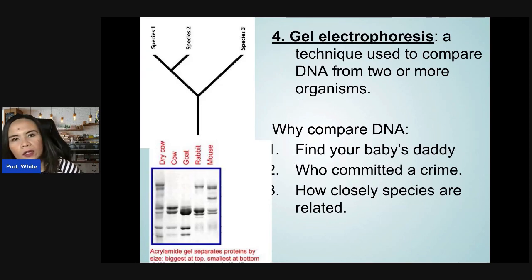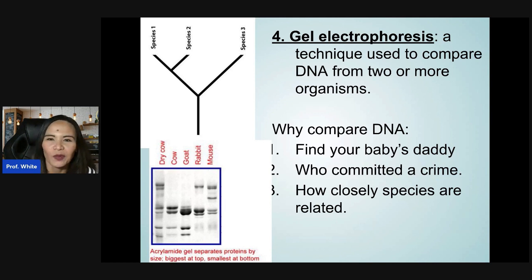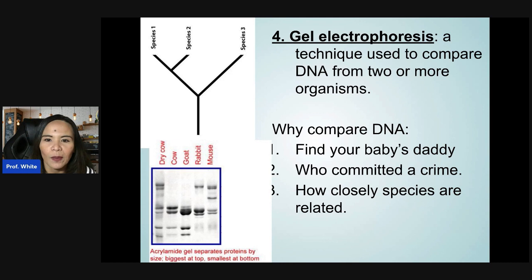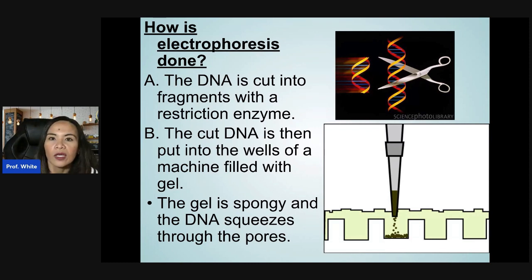Finally, gel electrophoresis is a technique used to compare the DNA from two or more organisms. Applications include paternity testing, identifying someone who committed a crime, or determining how closely species are related — like 23andMe and Ancestry. The DNA is cut into fragments with restriction enzymes and placed into wells of a machine filled with gel, which is spongy like jello, and the DNA squeezes through the pores.